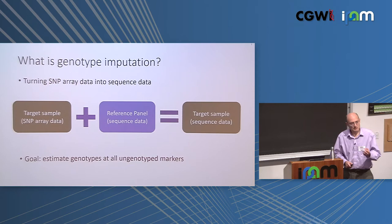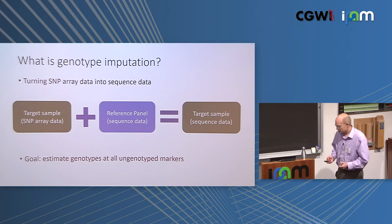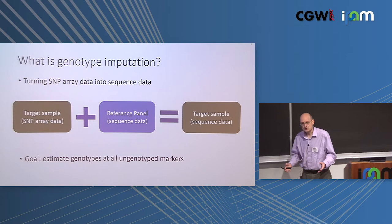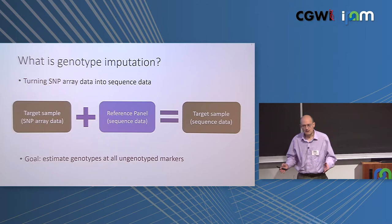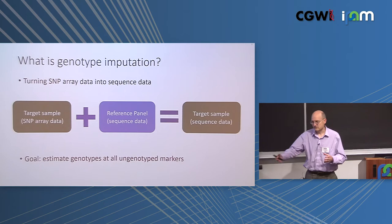The inputs for genotype imputation are a dense set of markers — typically half a million, a million, two million markers across the genome. You can do this in a single individual, but typically it's done on a whole study, a whole cohort of individuals. You have the SNP array data, and then in addition to that, you take a reference panel.